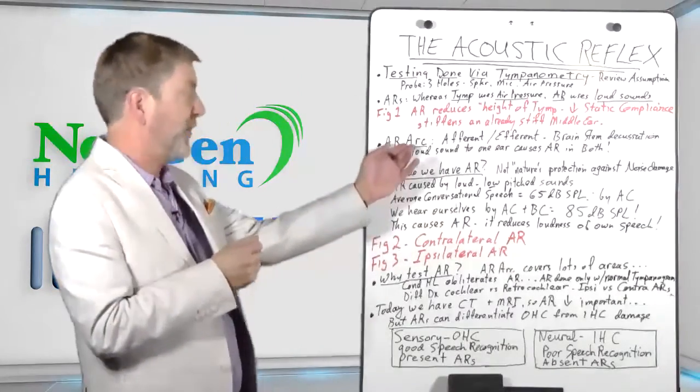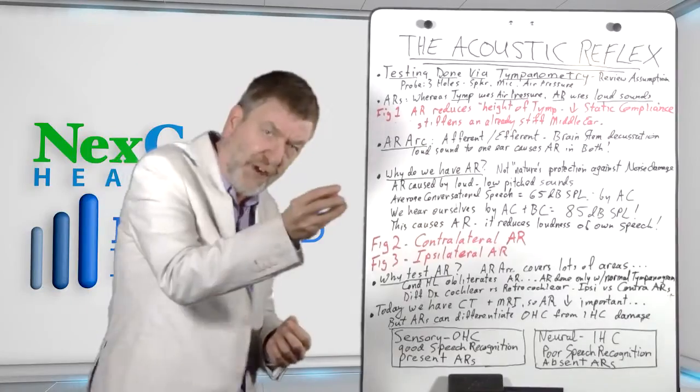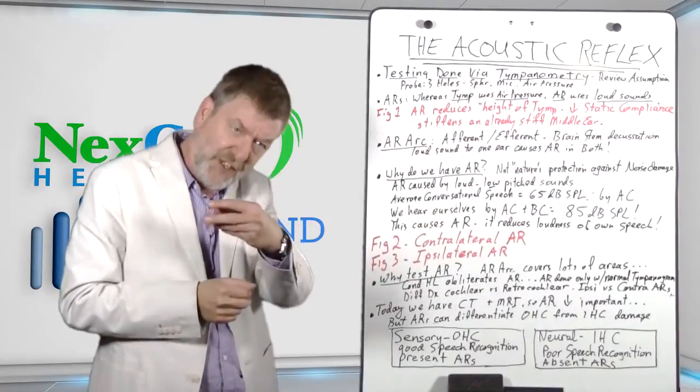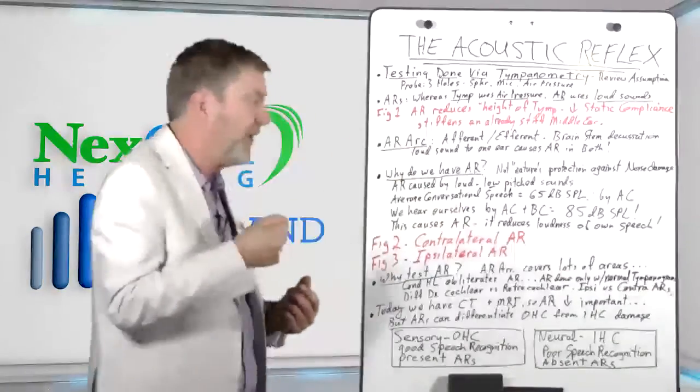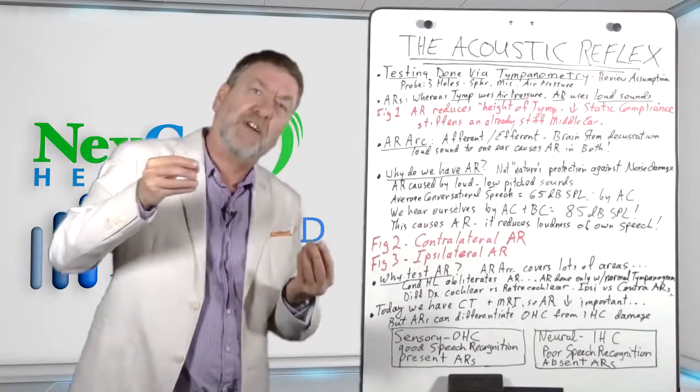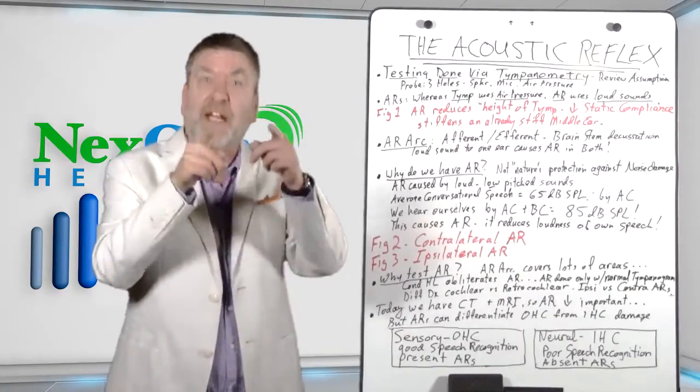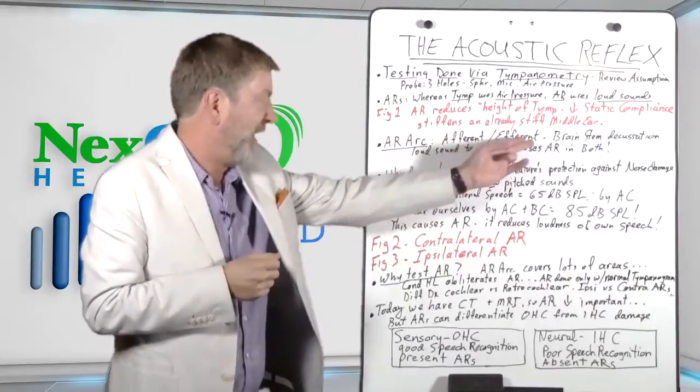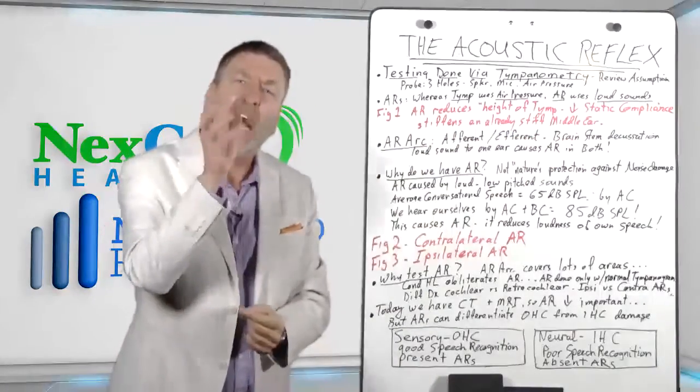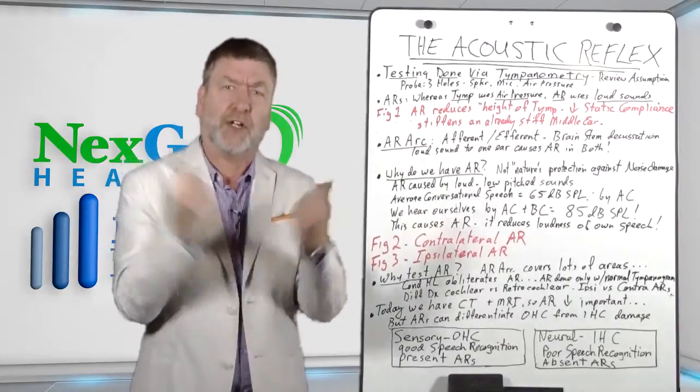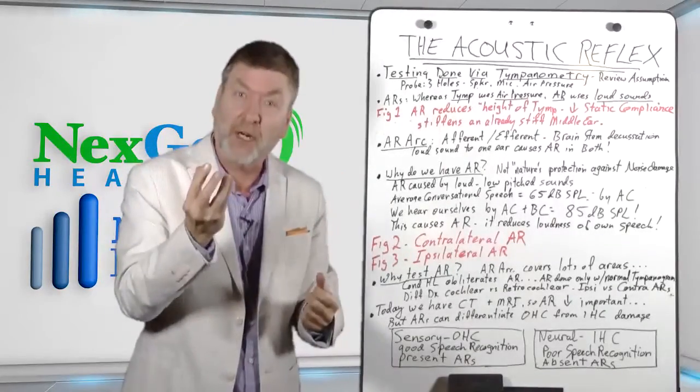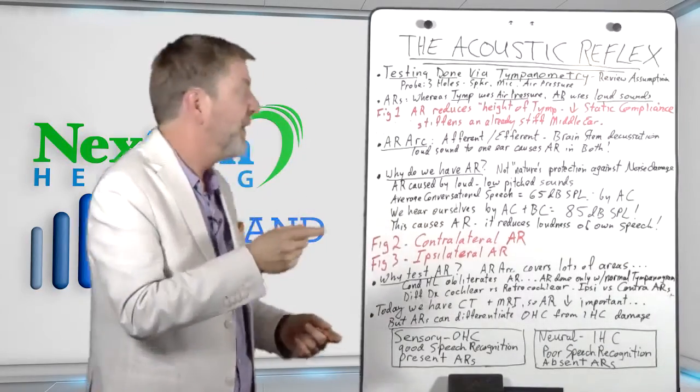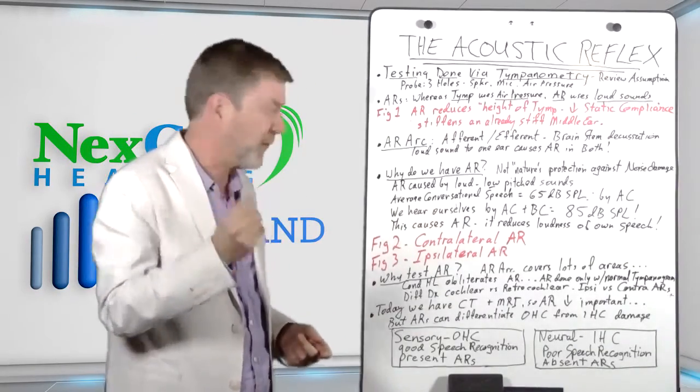If we look at that acoustic reflex arc, it has an afferent brain-going direction as well as an efferent brain-back-to-ear-going direction. It's an arc. And the afferent and efferent portions of that arc meet at the low brain stem, the superior olivary complex. The acoustic reflex, when you give a loud sound in one ear, it's going to cause an acoustic reflex in both ears. How come? Because of neural decussation occurring at the low brain stem. This is one of the more interesting facets of the acoustic reflex.